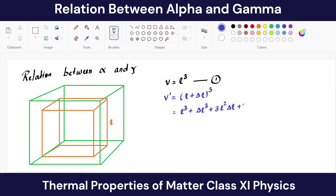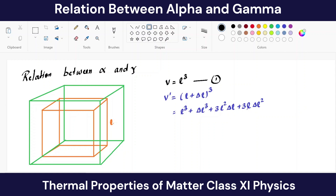Since ΔL is very small, the terms ΔL³ and ΔL² will both be neglected. We are left with the expression L³ + 3L²ΔL. This is our new volume — equation number two.